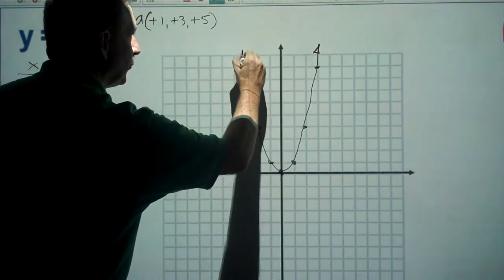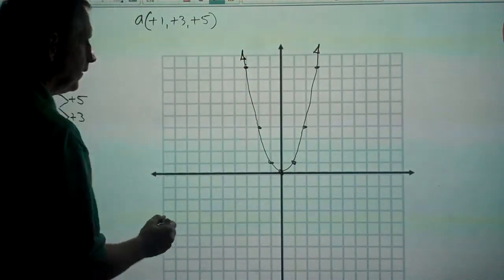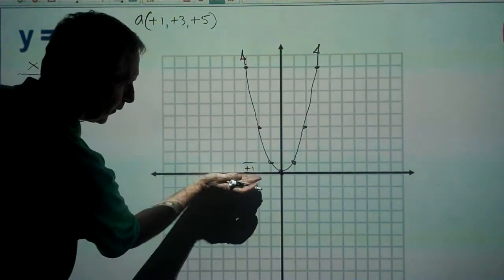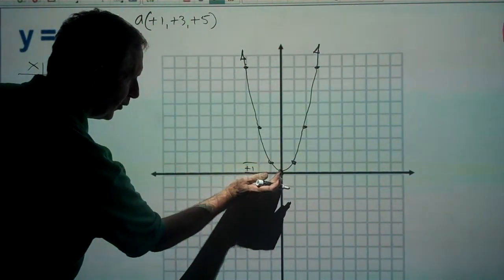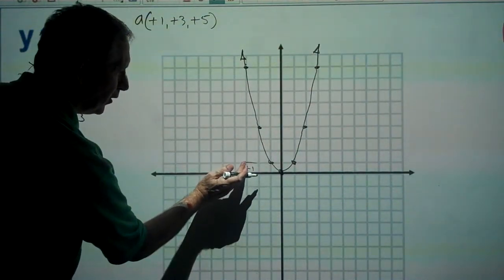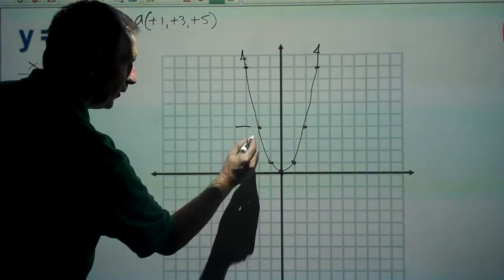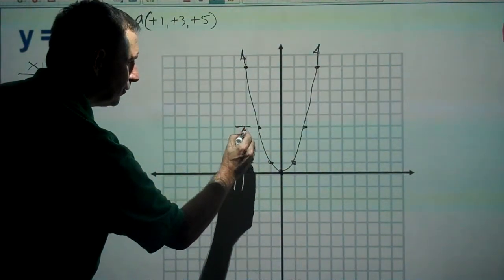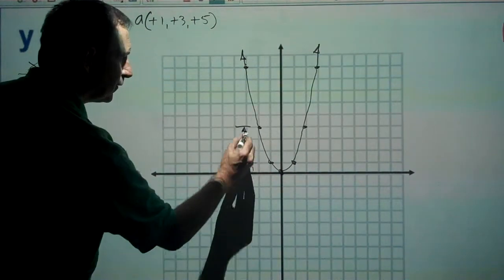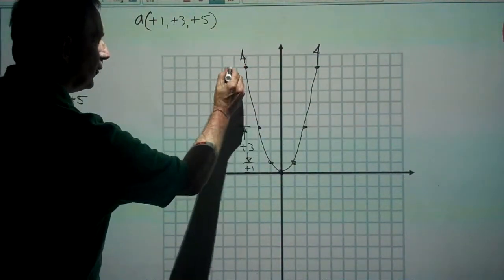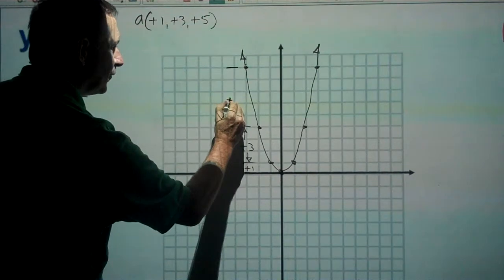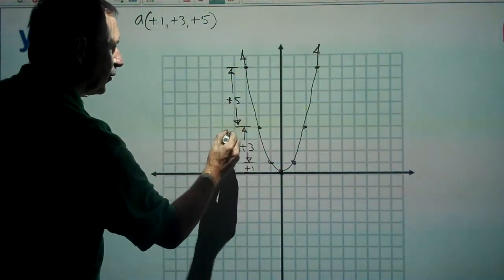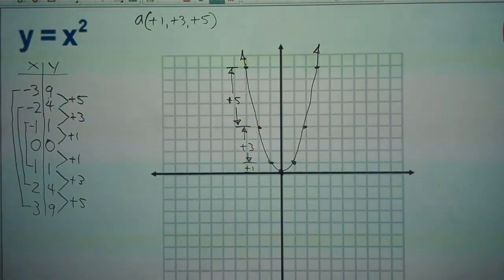Seven points really helps us do this well. We can notice in the graph: from input zero to negative one, output goes up one; from negative one to negative two, a plus three difference; and from negative two to negative three, a plus five increase. This becomes the basis for our step pattern for graphing any quadratic function.